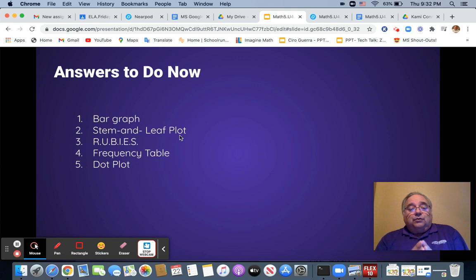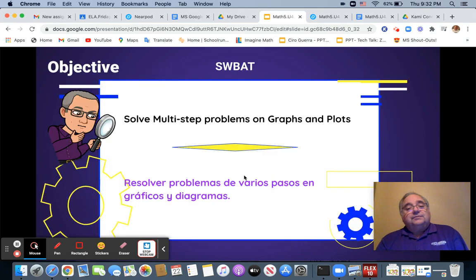Number four talked about a table which happened to be about frequency, the table about how many times things happen. And then the last one said that you use dots to graph it, so it was a dot plot. Hopefully you got that pretty quickly.